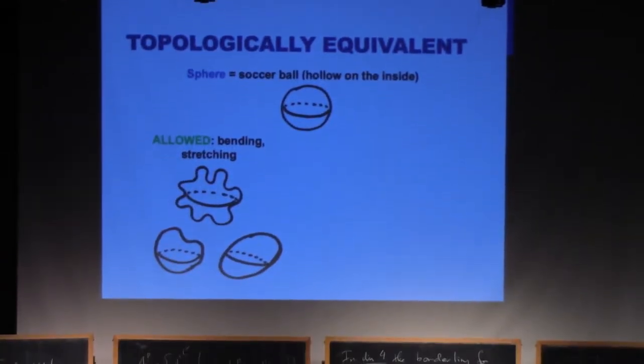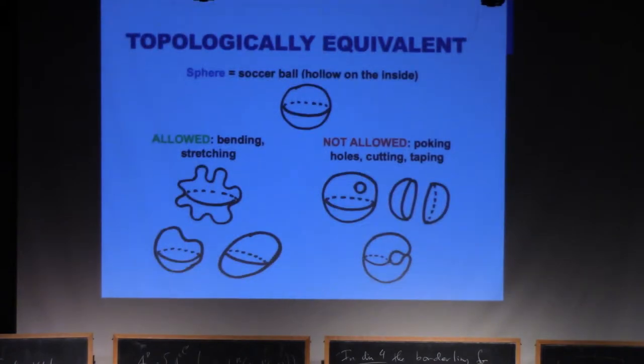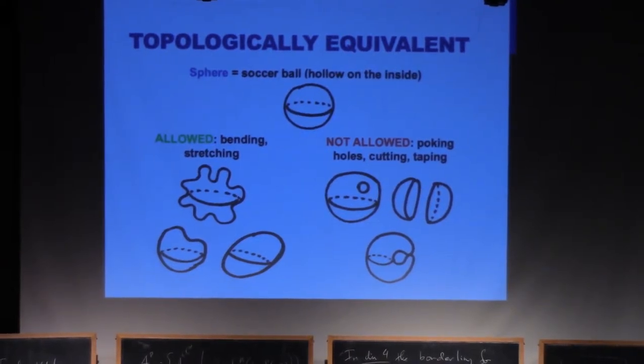So a sphere, if you haven't introduced it to the kids, it's a soccer ball so it's hollow on the inside. Something you're allowed to do to it is bend and stretch, so those pictures are topologically equivalent to the sphere. What you're not allowed to do is poke holes, cut, tape, stuff like that, so those pictures on the right are not topologically equivalent to the sphere, so we would not consider those to be the same thing.